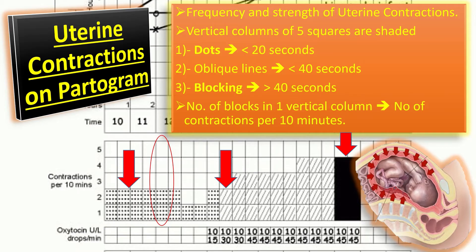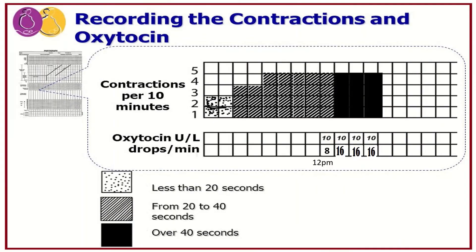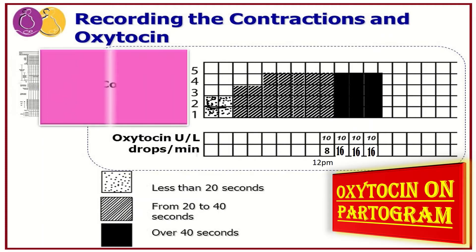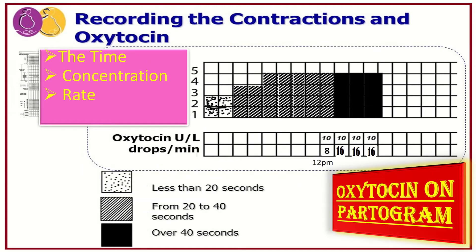For oxytocin on the partogram: in the space provided, the time of commencement, the concentration, the rate of administration, and subsequent increments of oxytocin are recorded. For example, at 12 p.m., 10 units per one litre of oxytocin is started at the rate of about 8 drops per minute, which may be increased to 16 depending upon the uterine contractions.